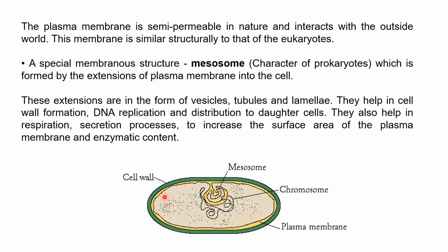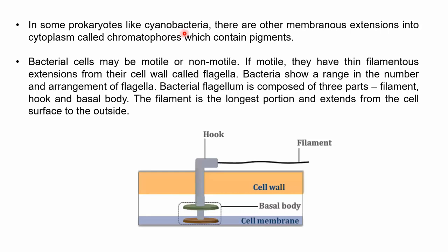In some prokaryotes like cyanobacteria (blue-green algae), there are other membranous extensions into the cytoplasm called chromatophores. 'Chroma' is always related to pigments, so chromatophores are extensions that contain pigments. Bacterial cells may or may not have these extensions — in blue-green algae, chromatophores provide the color to the bacteria.